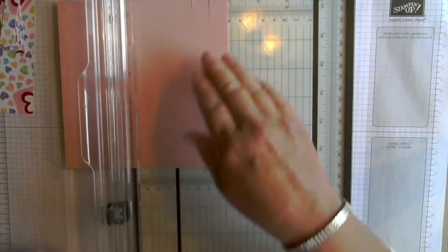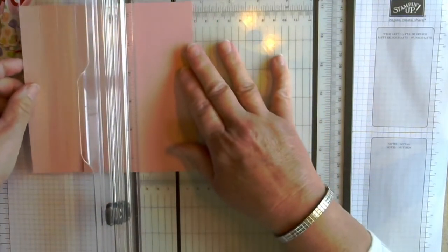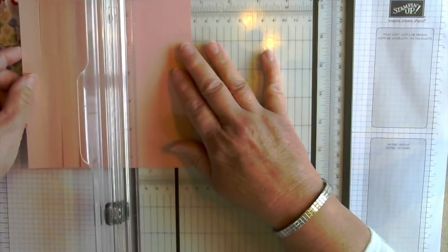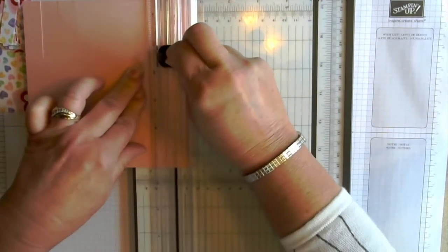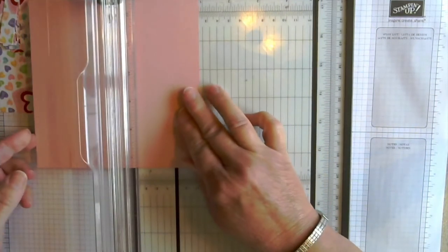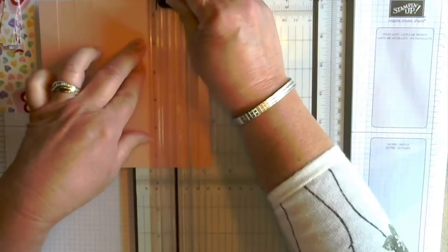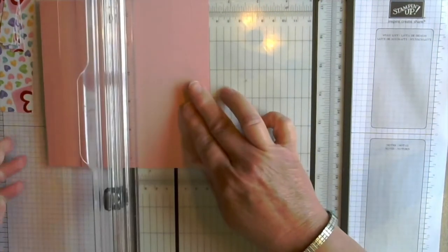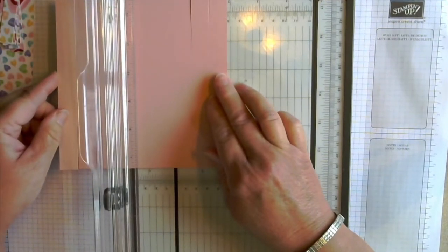Then once we have that done, we're going to flip it completely around. So we're going to put the little tabs on the other side. So again we're going to start at 5 eighths and cut from the score line to the outside edge on both sides. One and a quarter, and one and seven eighths.